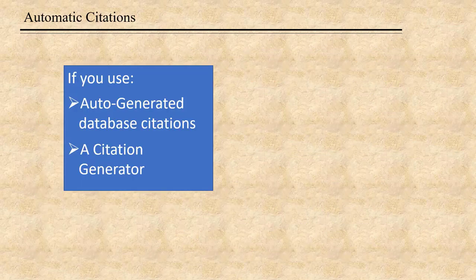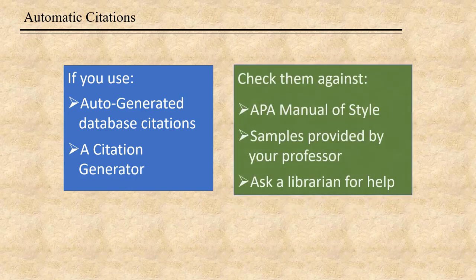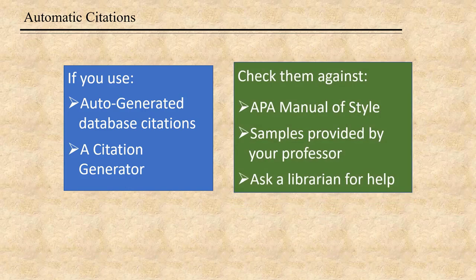If you use auto-generated database citations — the library databases will format citations for you and they do a pretty good job — or an online citation generator, make sure you check those citations against a reputable source to make sure they're correct before turning your paper in. After all, those people aren't getting a grade for those citations, but you are.